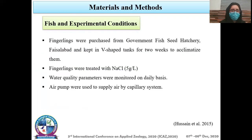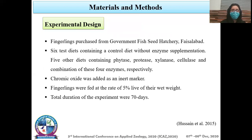Materials and methods — fish experimental conditions. Fingerlings were purchased from Gourmet Fish Seed Hatchery, Sattoabad, and kept in V-shaped tanks for two weeks to acclimatize. Fingerlings were treated with NaCl. Water quality parameters including temperature, pH, and dissolved oxygen were monitored on a daily basis. Air pumps supplied air via a capillary system, which also produced water bubbles in the tanks. Six test diets were used: one control diet without enzyme supplementation, and four diets containing phytase, protease, xylanase, and cellulase individually, plus a combination of all four enzymes. Chromic oxide was added as an inert marker. Fingerlings were fed at 5% of their live wet weight, and the total experiment duration was 70 days.